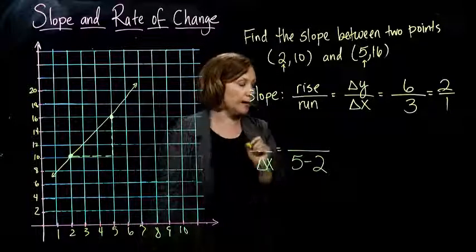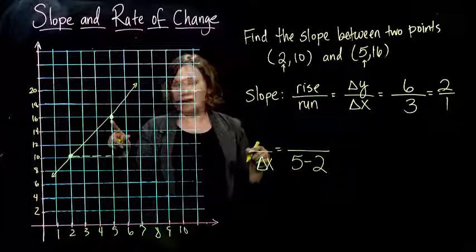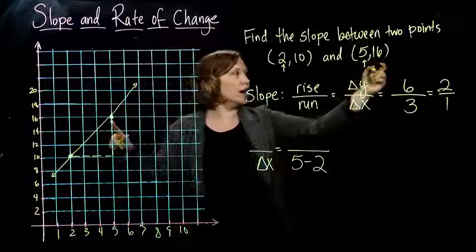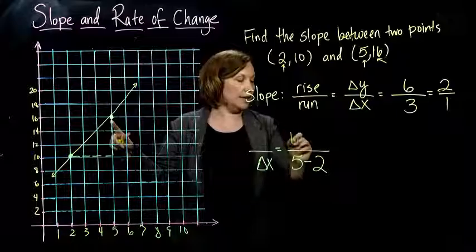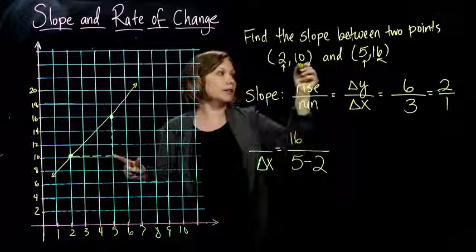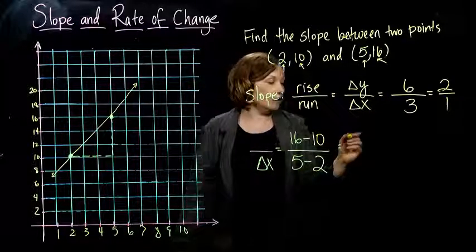So I'm going to take my five and subtract the two. And that's what goes on the bottom, right? That's my change in x. That's how much my x changed. But if I start at the five, right, the change, to measure the change in the y's,